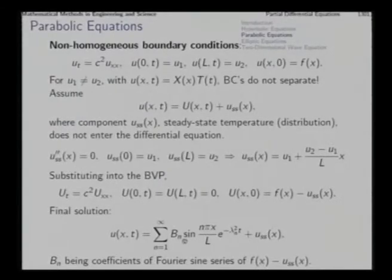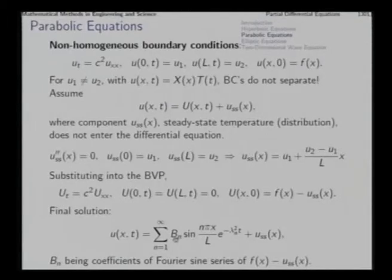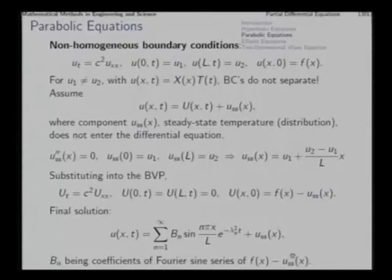The transient solution capital U satisfies the earlier initial boundary value problem with homogeneous boundary conditions. The initial condition becomes f(x) minus U_ss, which is the initial value of capital U. With this modified initial condition, the solution is composed with the steady-state solution to get the complete solution. The coefficient b_n is found from the Fourier sine series of f(x) minus U_ss.